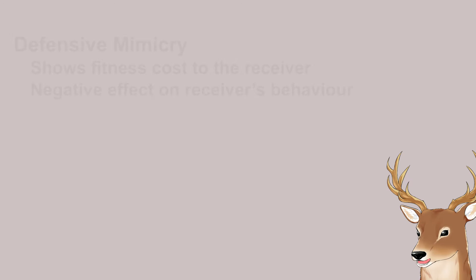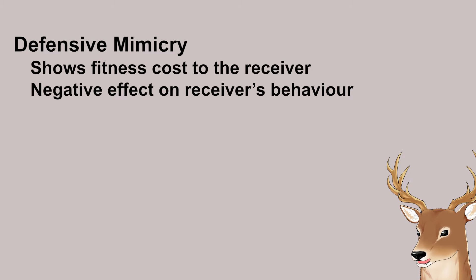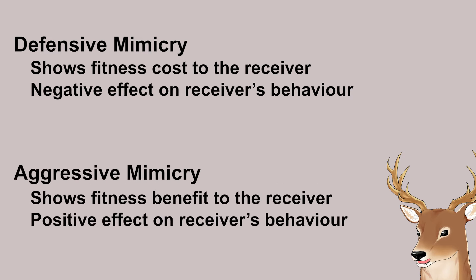Mimicry can be defensive or aggressive. Defensive mimicry shows fitness costs to the receiver — think of it like punishment — affecting them negatively, such as repelling them. Aggressive mimicry shows fitness benefit to the receiver — think of it like a reward — affecting the receiver positively, such as attracting them.